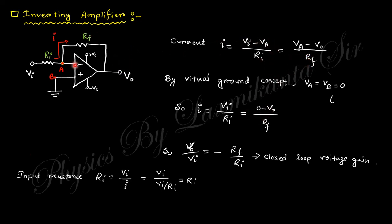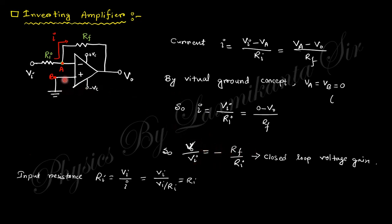From this, Vo/Vi = −Rf/Ri. The output voltage Vo equals negative (Rf/Ri) times Vi. The output is inverted with respect to the input voltage — that's why this is called the inverting amplifier, denoted by a negative sign.